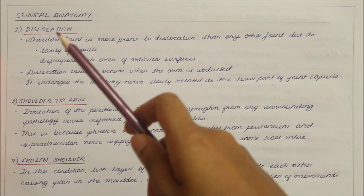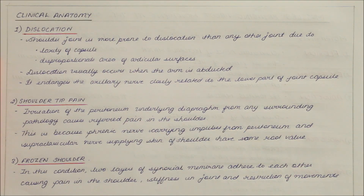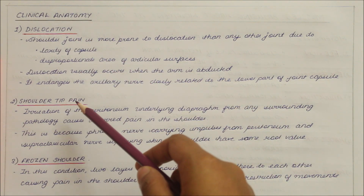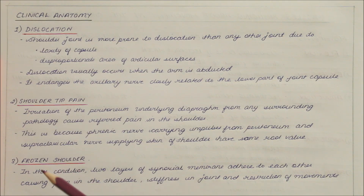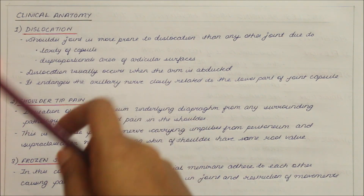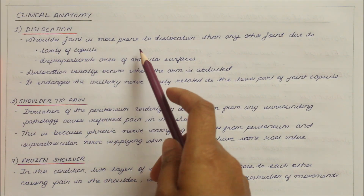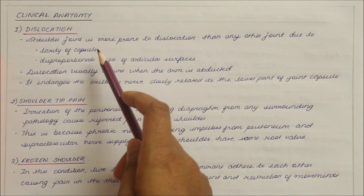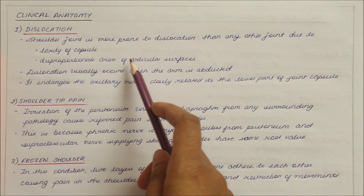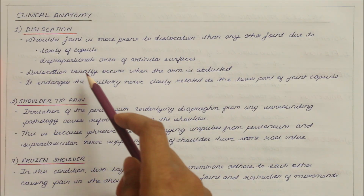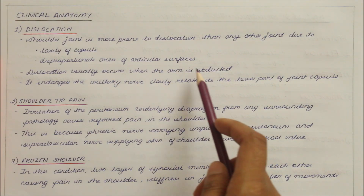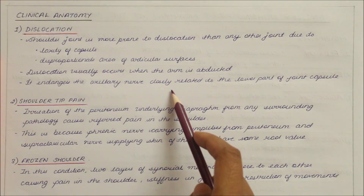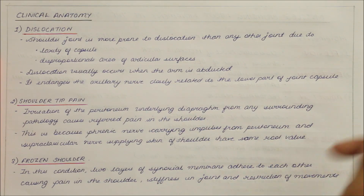Finally, let's look at some clinical anatomy associated with the shoulder joint. Three important conditions are dislocation, shoulder tip pain, and frozen shoulder. The shoulder joint is more prone to dislocation than any other joint due to the laxity of the capsule and the disproportionate area of the articular surfaces. Dislocation usually occurs when the arm is abducted and endangers the axillary nerve, which is closely related to the lower part of the joint capsule.